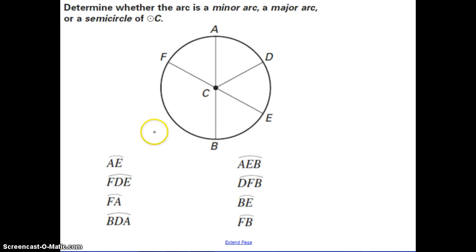So here we want to determine whether the arc is a minor arc, a major arc, or a semicircle of C. So AE. This should already give you a hint that two letters from A to E, this is going to be a minor arc. FDE. Now, it goes from F to E, and those are the ends of diameters. This is actually a semicircle.